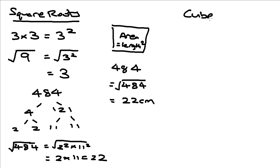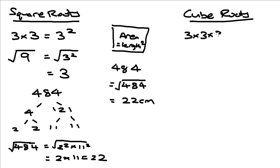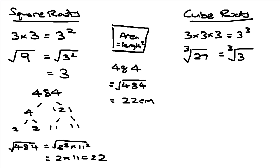Similarly, when we look at cube roots: a cube is when the number is multiplied 3 times by itself, so 3 times 3 times 3 — we call this 3 cubed. If we want to find the cube root of a number, say 27, we are looking at what number multiplied by itself 3 times gives you 27. The answer is 3, so the cube root of 27 is 3.